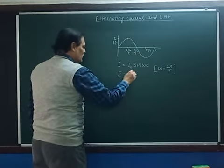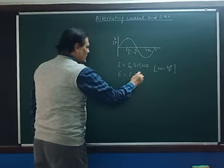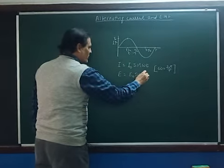Here E is called instantaneous EMF at time t. It is E₀ sin ωt, where E₀ is called the peak EMF and ω is the angular frequency having the value 2π/T.